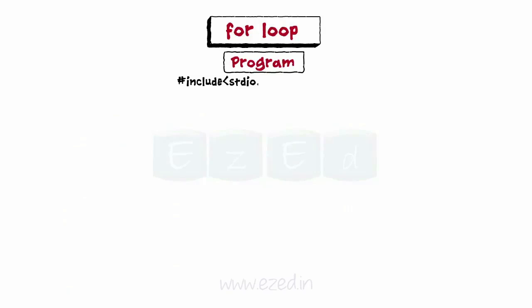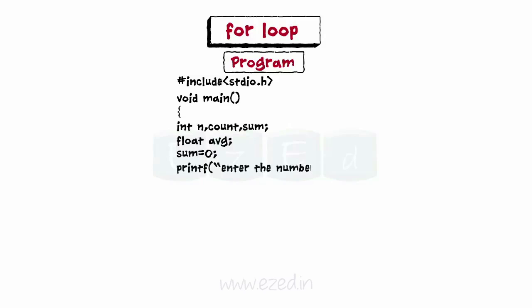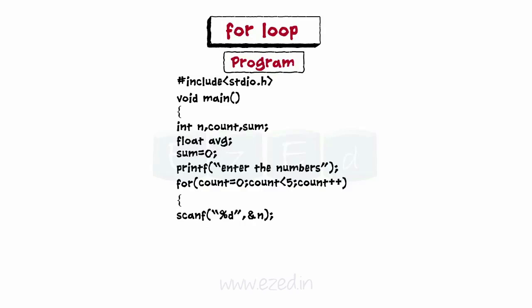Let's write a program illustrating the use of the for loop. This program finds the average of five numbers. Let's declare the main function. The variable n stores the numbers, sum is used to maintain the summation, and count is used as the counter variable. Ask the user to enter the numbers and store each value in the variable n. We use a for loop here. In the for statement, the counter count is initialized to 0, the test condition is placed along with which counter is incremented. Inside the loop, scan five consecutive values. Add the number to the value stored in sum, find the average, and finally print the average.